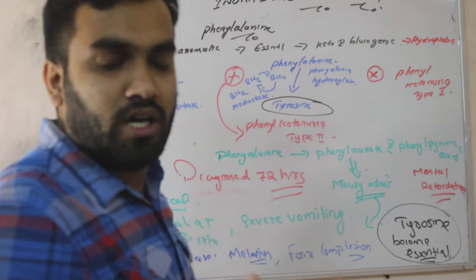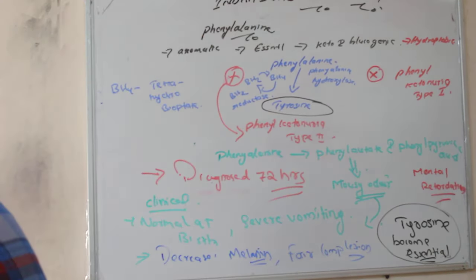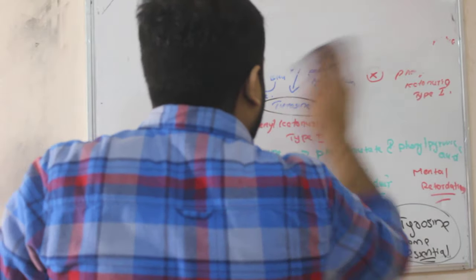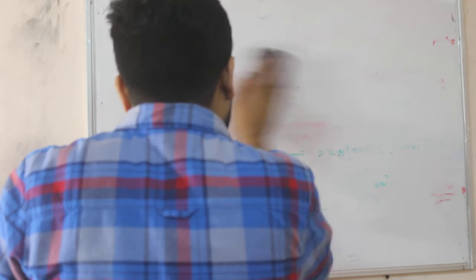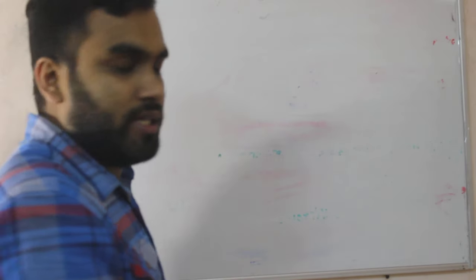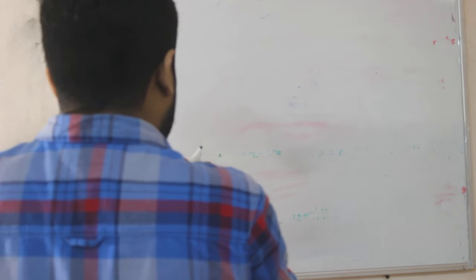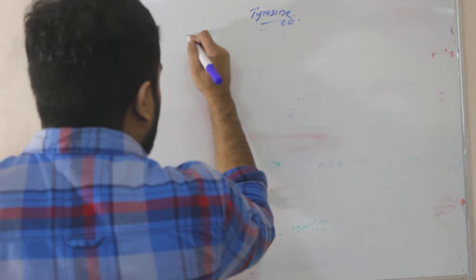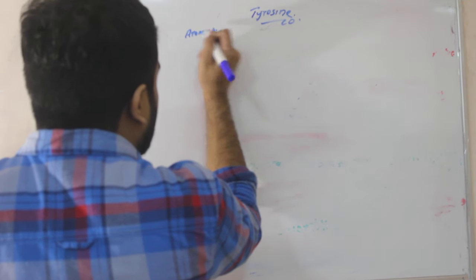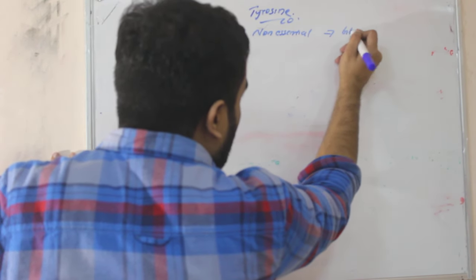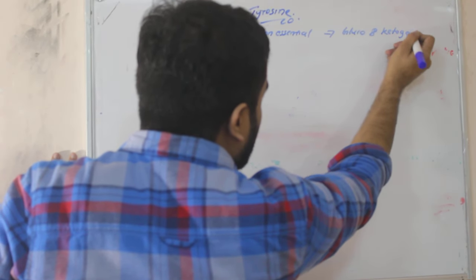Now next we will study the metabolism of tyrosine. Next amino acid is our tyrosine. Tyrosine is a very important amino acid because tyrosine is giving us three things. Three things are formed from tyrosine - tyrosine is giving us hormones, thyroid hormones, then our catecholamines. So tyrosine is very important. Tyrosine metabolism - tyrosine is what? It is also aromatic, it is non-essential, it is glucogenic and ketogenic.